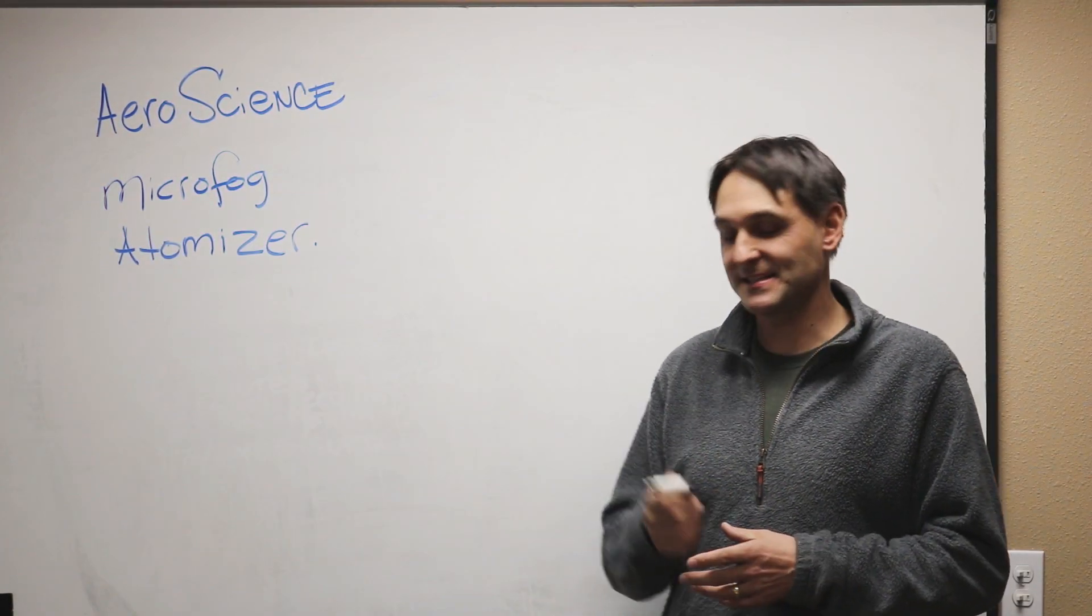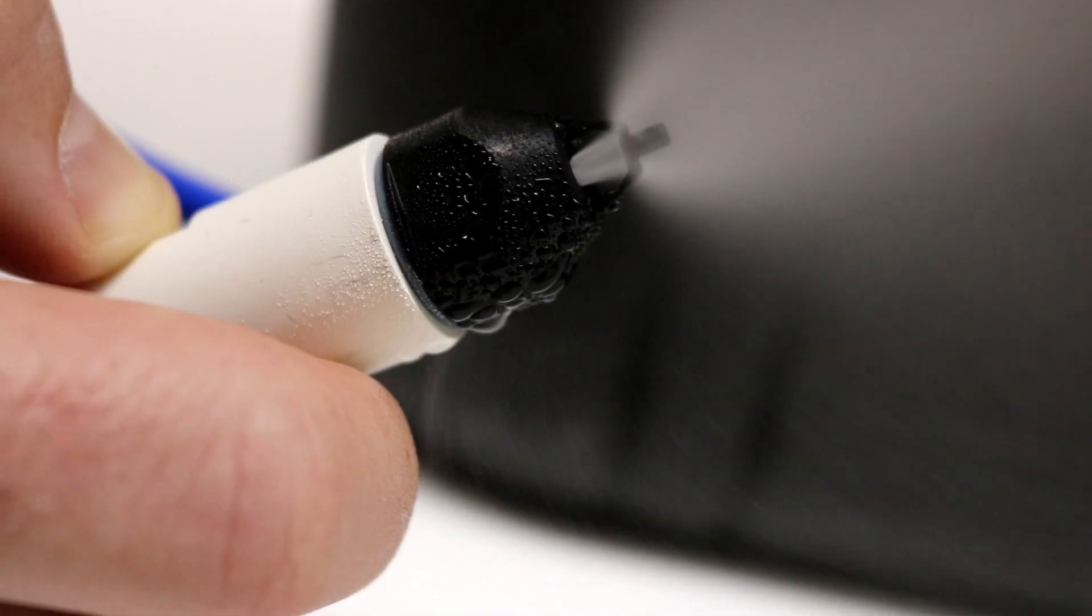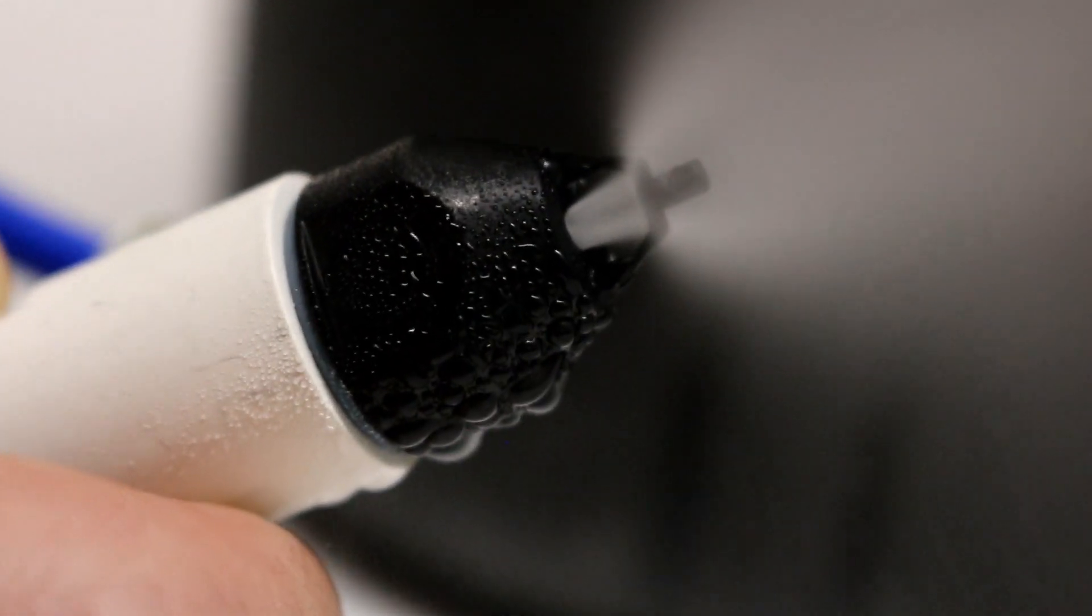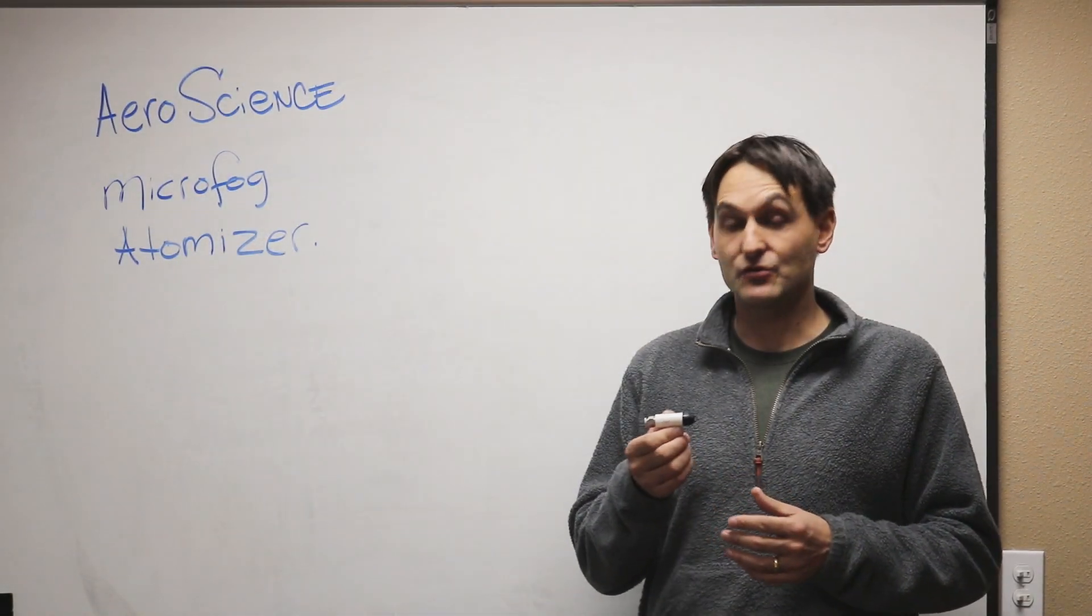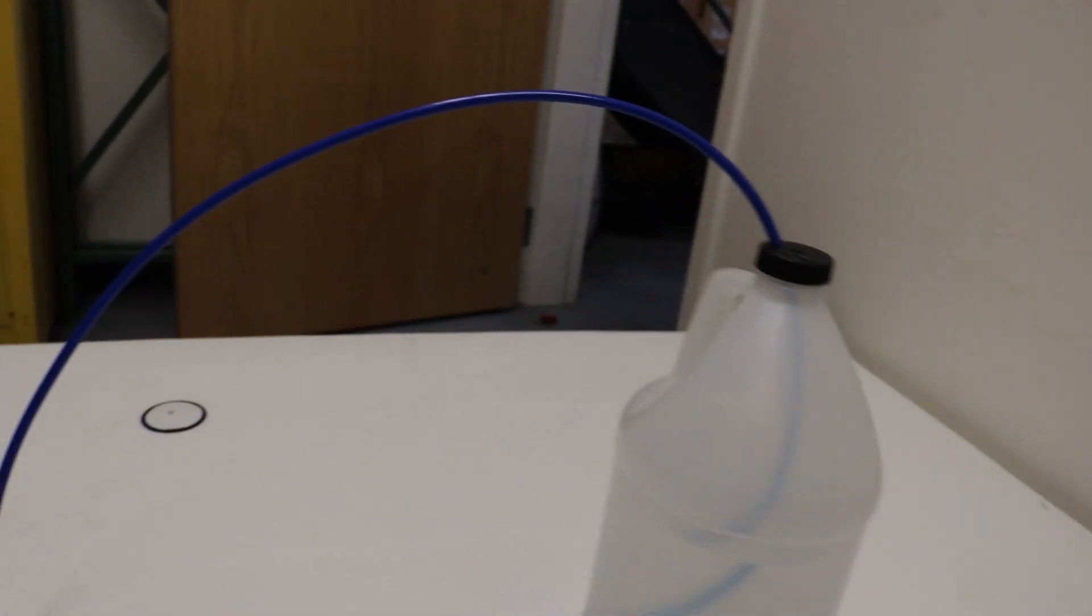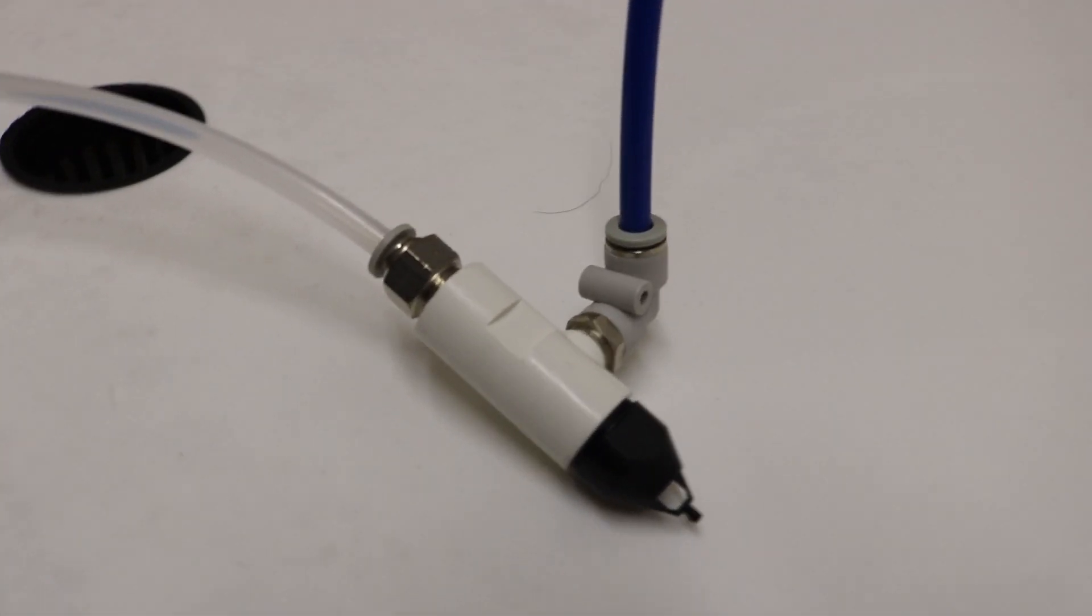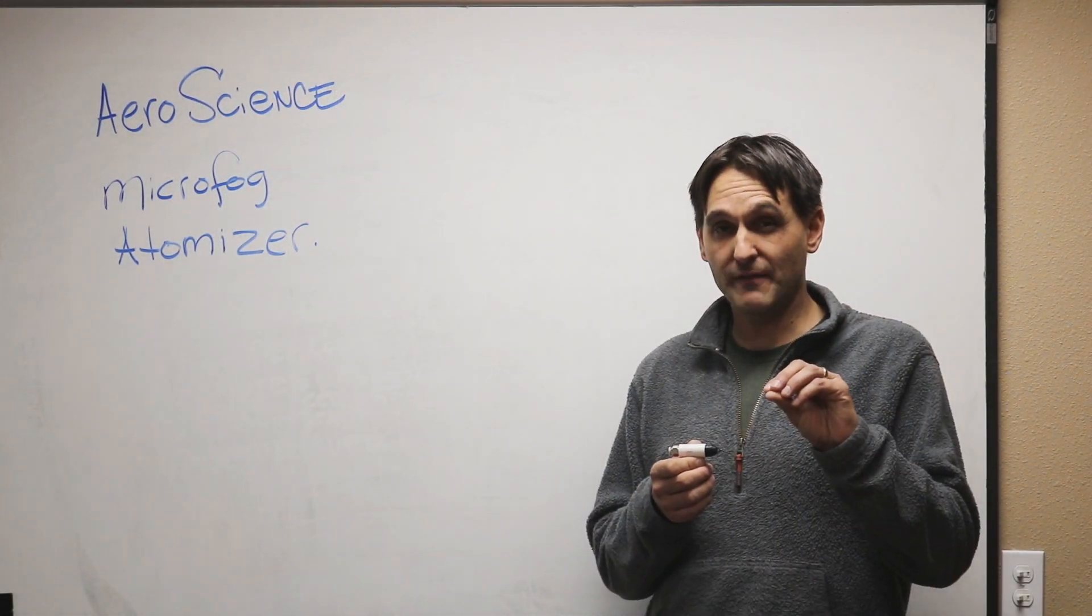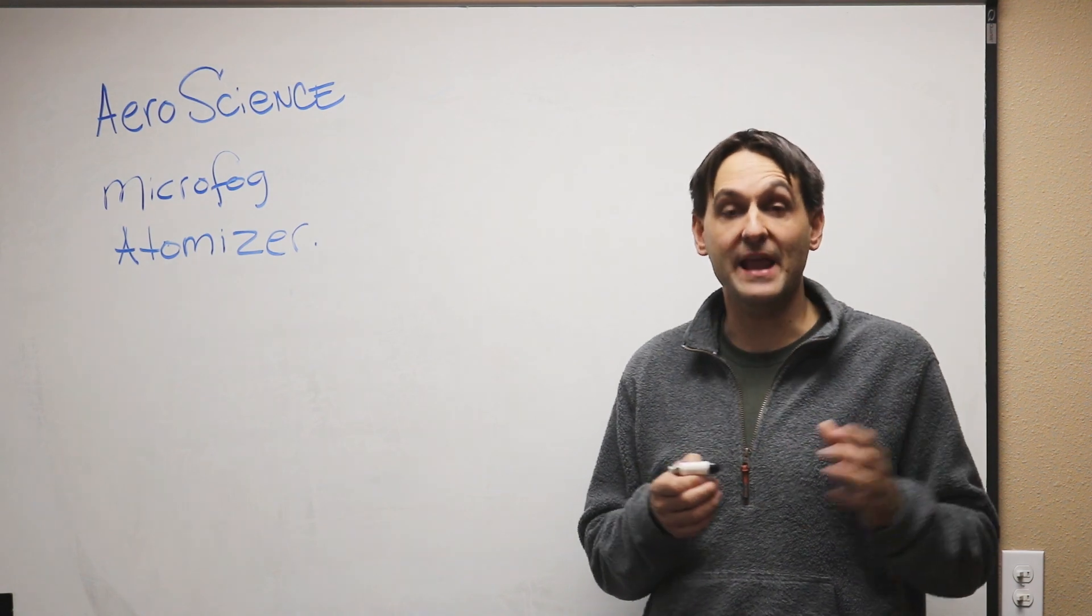So the key product to Aeroscience is the microfog atomizer. This new version, made out of carbon fiber, is about 75% more cost effective. This dry fog atomizer takes compressed air and water and makes a zero to ten micron dry fog. Our actual dry fog droplet size is around eight microns.